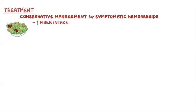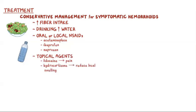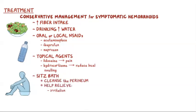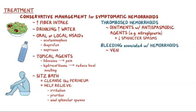The initial conservative management for symptomatic hemorrhoids is usually home-based by increasing fiber intake and drinking more water. Individuals may also take oral or topical NSAIDs like acetaminophen, ibuprofen, or naproxen to treat pain, as well as topical agents containing anesthetics like lidocaine for pain, or a hydrocortisone cream to reduce local swelling. Individuals may also take sitz baths, which are warm shallow baths that cleanse the perineum to help relieve irritation, pruritus, and anal sphincter spasms. Individuals with thrombosed hemorrhoids may also apply ointments containing antispasmodic agents like nitroglycerin, a nitric oxide donor, to reduce painful sphincter spasms. Finally, individuals with bleeding associated with their hemorrhoids may get venoactive agents or phlebotonics to increase venous tone of hemorrhoidal tissues and reduce bleeding.